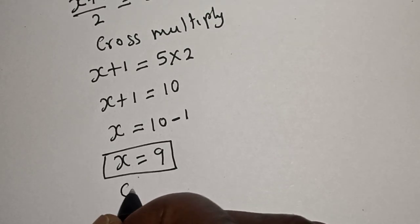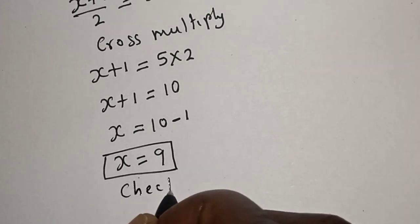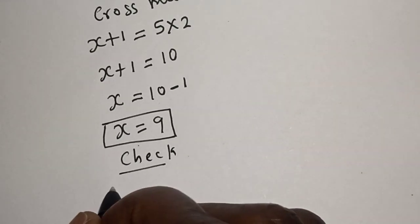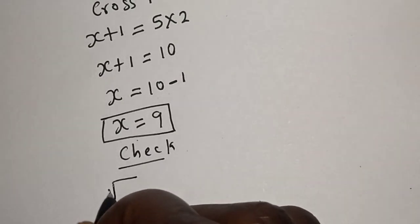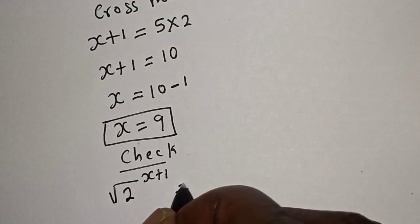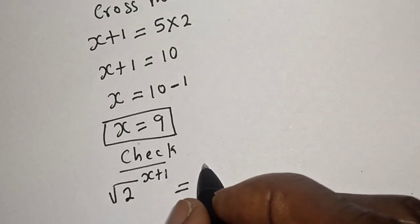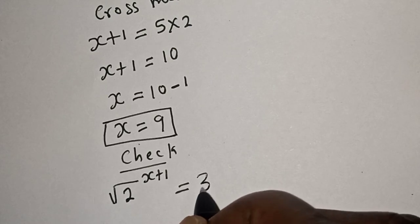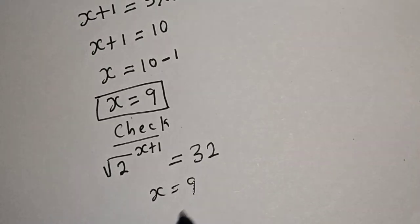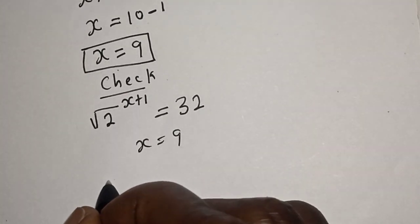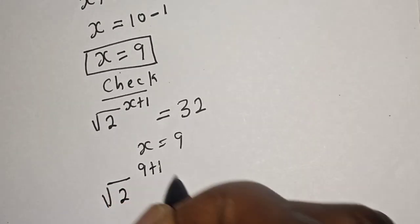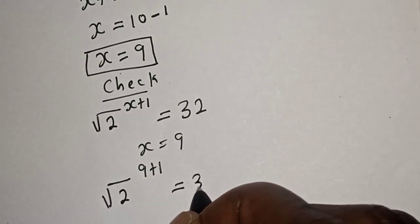Let's check. We have the given equation: square root of 2 raised to power s plus 1 is equal to 32. Now when s is equal to 9, we have square root of 2 raised to power 9 plus 1, which must be equal to 32.